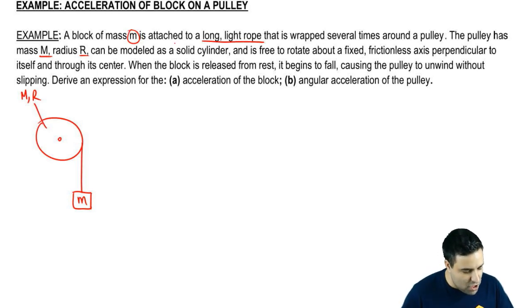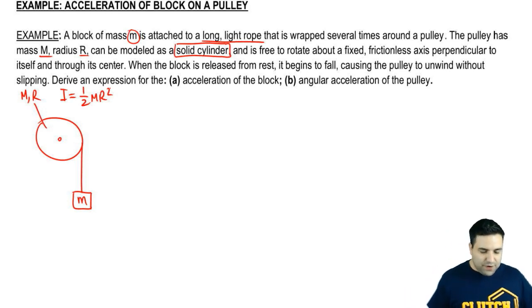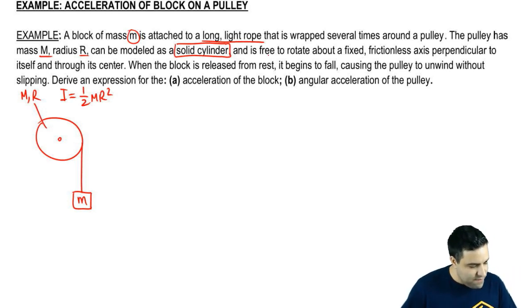It can be modeled as a solid cylinder. The fact that you see solid cylinder here means we're going to use a moment of inertia equation of half MR squared. And it is free to rotate about a fixed frictionless axis perpendicular to itself and through its center. Lots of words.